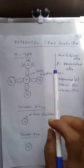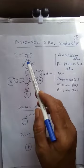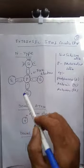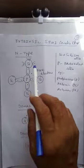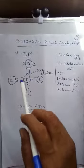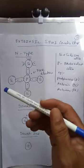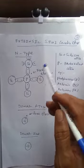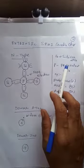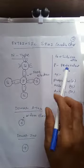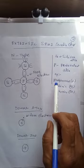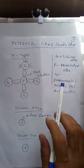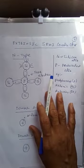We already know that silicon material has all silicon atoms neighboring each other and sharing covalent bonds by sharing electrons with neighboring atoms. Pentavalent atoms are those whose valence electrons number five. Examples are phosphorus, arsenic, and antimony — these are the pentavalent atoms.